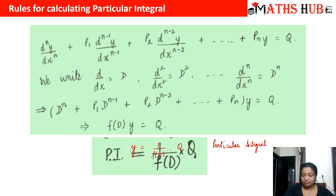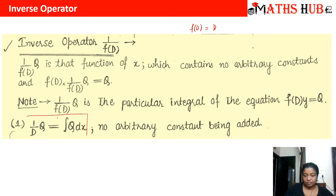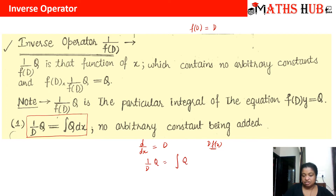Let us focus on the first method — what is your inverse operator. If f(D) is simply D, then y = (1/D)·Q, and 1/D of Q is nothing but the integration of Q dx. So that is the meaning of the inverse operator: just as D means differentiation (d/dx), the operator 1/D means integration. You should remember what the inverse operator means.